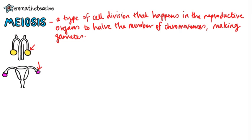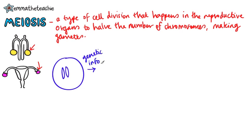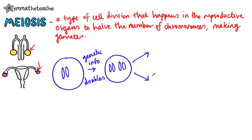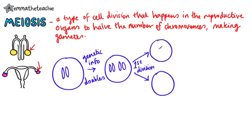Let's take a look at the actual process of meiosis. Here we've got a body cell, so we'll give it some chromosomes. The first stage is the same as mitosis — the genetic information doubles, or copies, so we get twice the number of chromosomes. The next stage is the same as well: we have a division, so this cell splits in two and the genetic information is split between them.